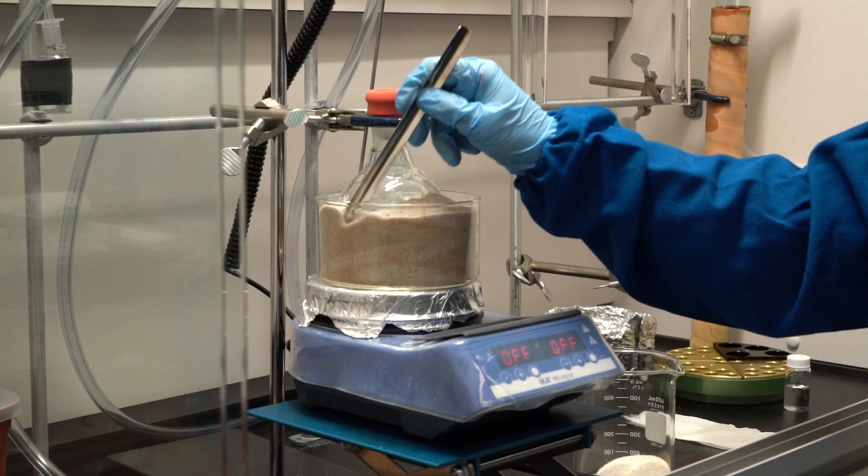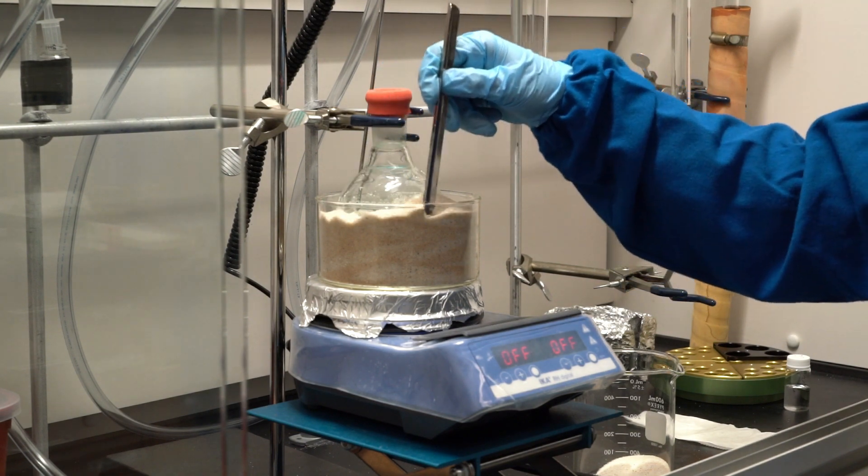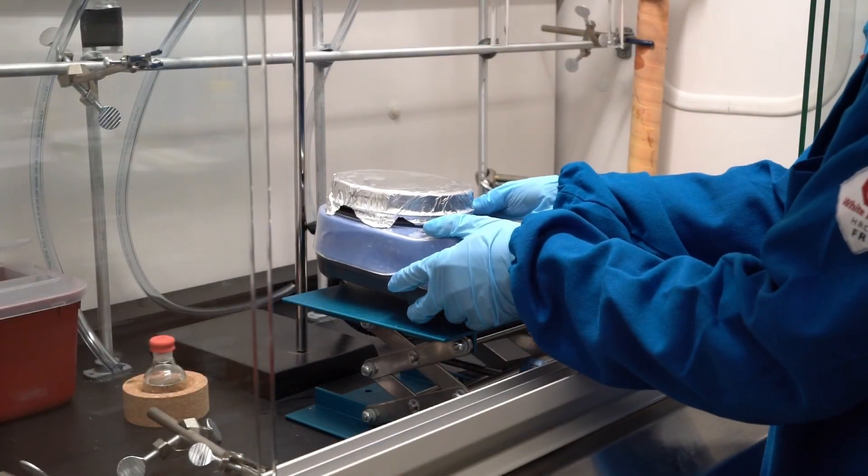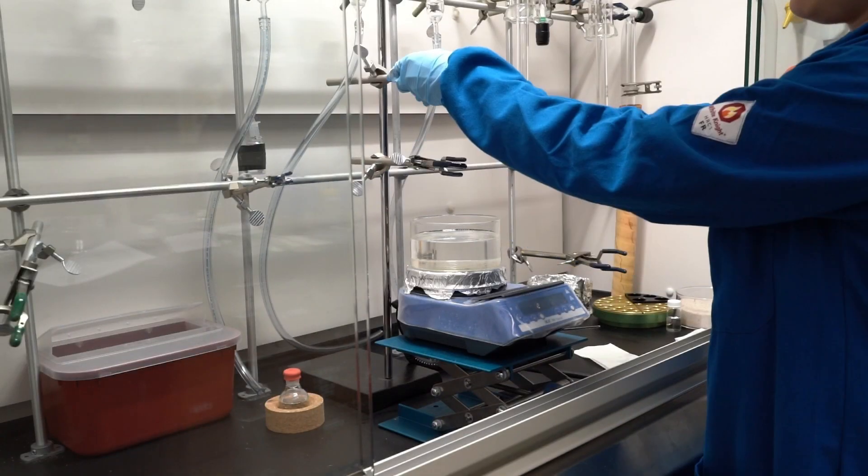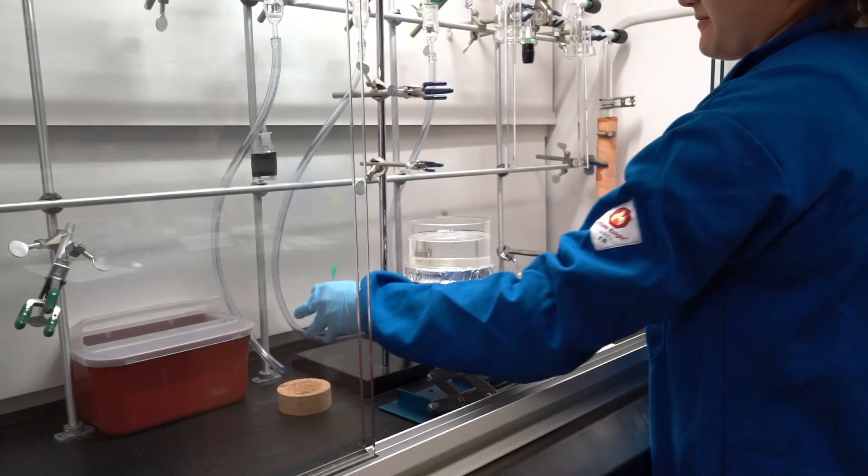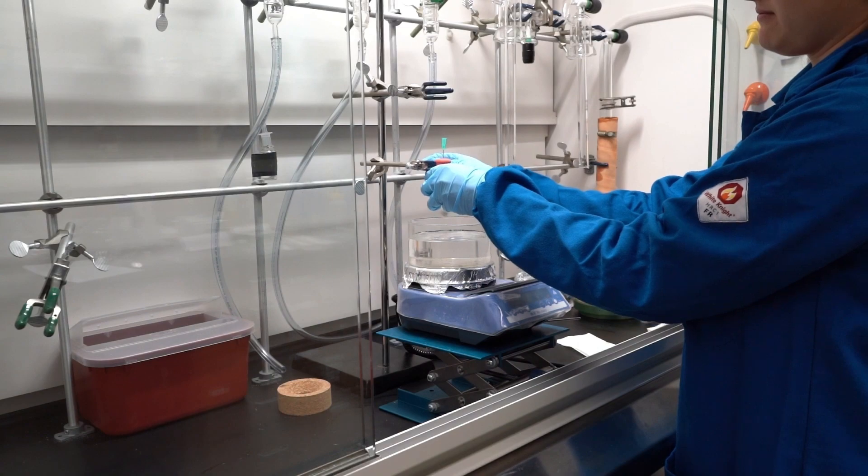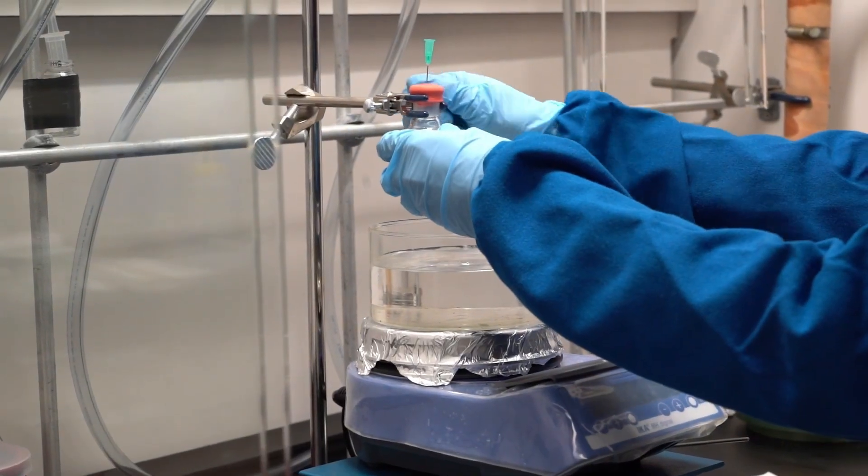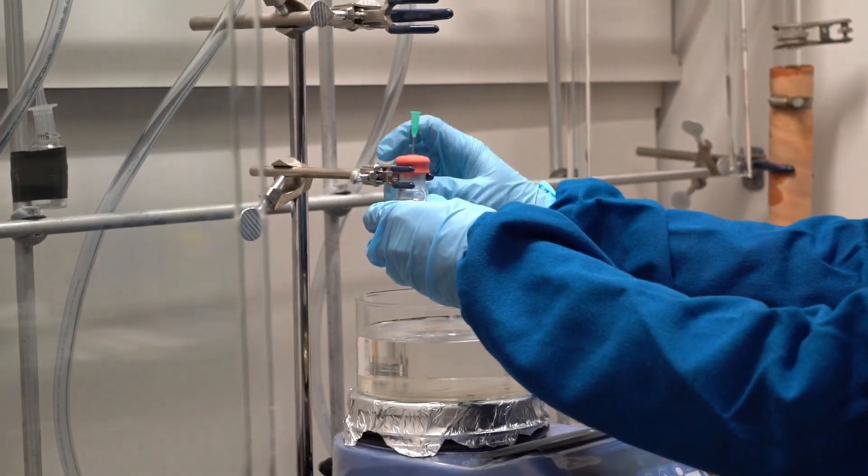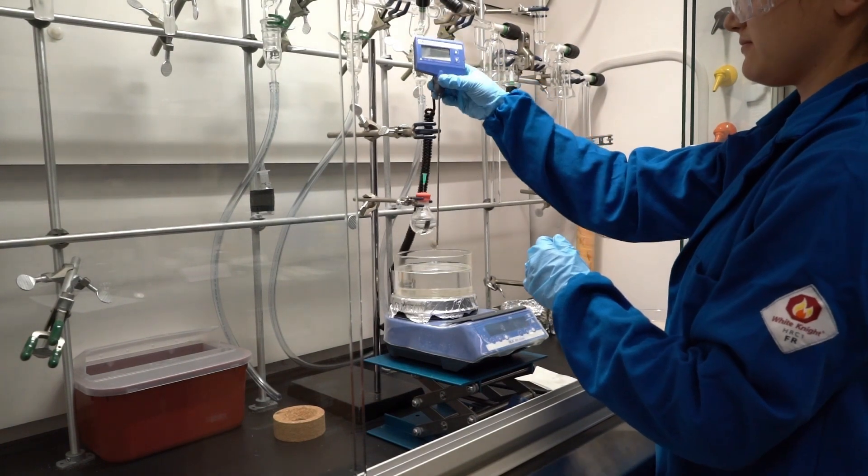When setting up an oil bath, we place a lab jack beneath the hot plate. A crystallization dish or any metal container can contain the oil. After that, clamp your flask and a thermometer that is appropriate for your reaction temperature.